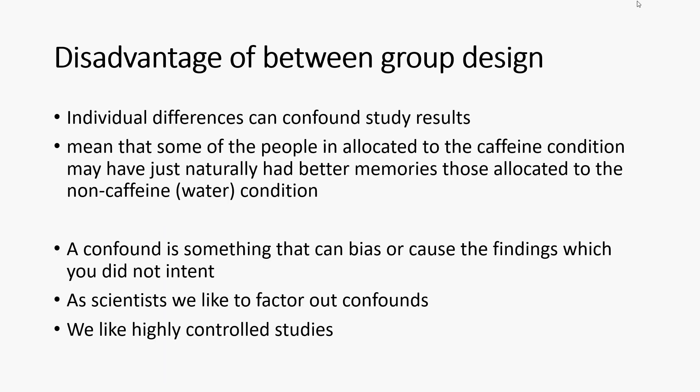The disadvantage of the between groups design is that individual differences emerge. With two separate groups, the results might be due to one group simply having naturally better memory than the other. We know that some individuals have better memories than others, and that becomes a problem with a between groups design.